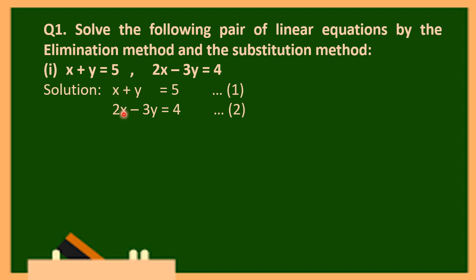We cannot delete a variable until the terms are like terms, meaning they have the same coefficient. In equation 1, the coefficient of x is 1; in equation 2, the coefficient of x is 2. For y, the coefficient is 1 in equation 1 and minus 3 in equation 2. There is no equal coefficient in any variable, so to delete one variable we have to make the terms like terms.